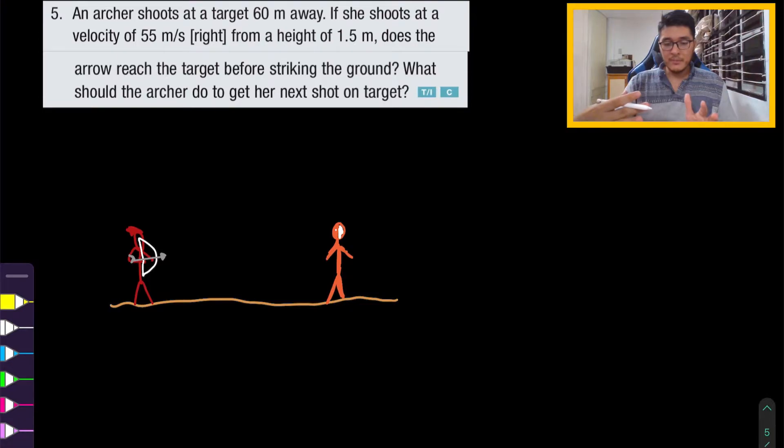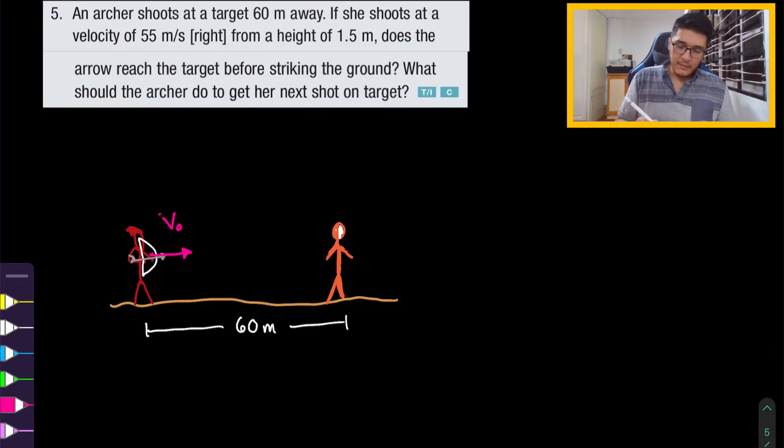Now from our visualization, let's try to draw in what we are given in the question. We were given that the target is 60 meters away. And they also mentioned that the initial launching velocity of the arrow is 55 meters per second to the right. So I drew it directly to the right because that's the way that they were telling us, 55 meters per second to the right. And the other piece of information that they gave us is that it was launched from a height of 1.5 meters.